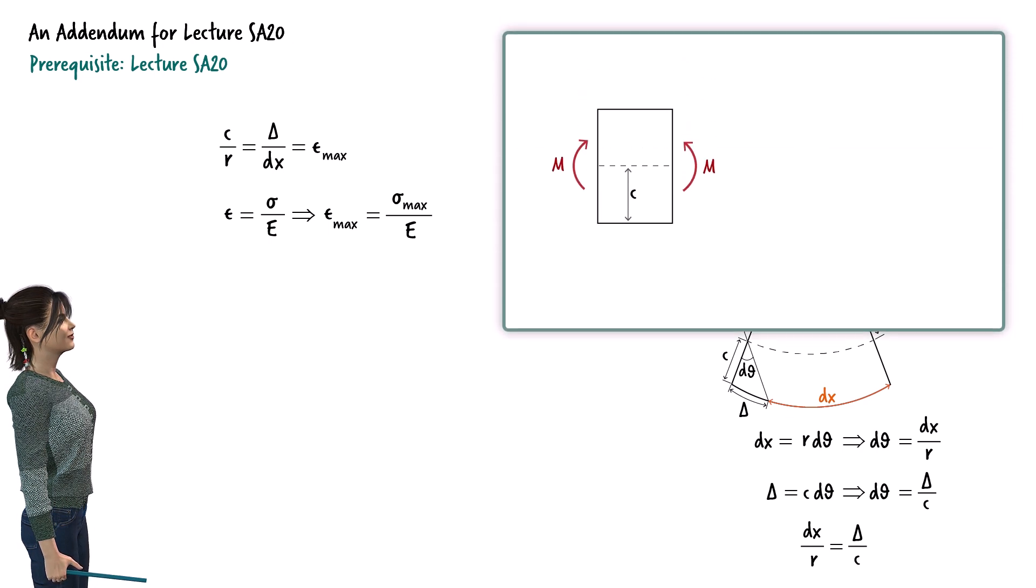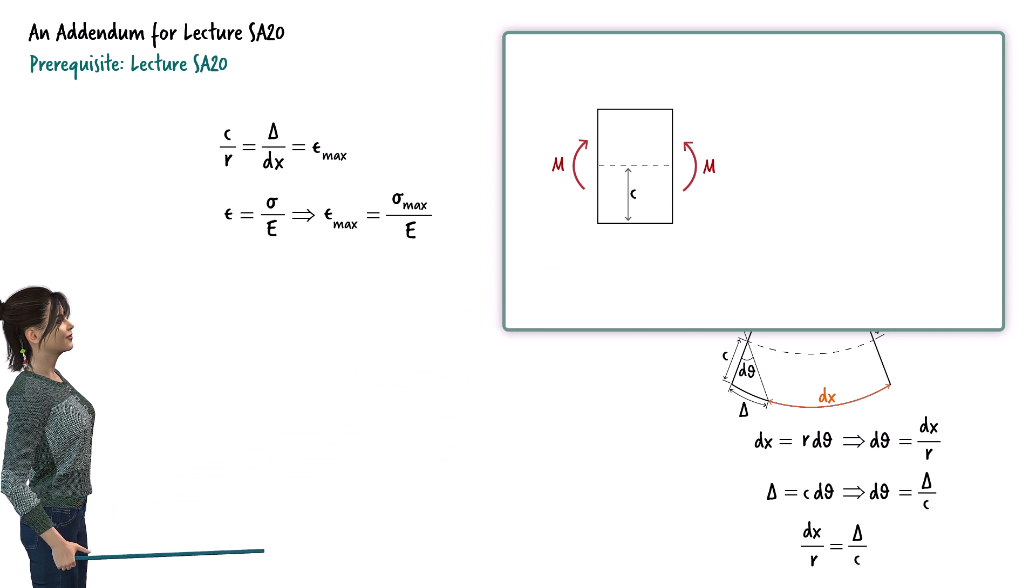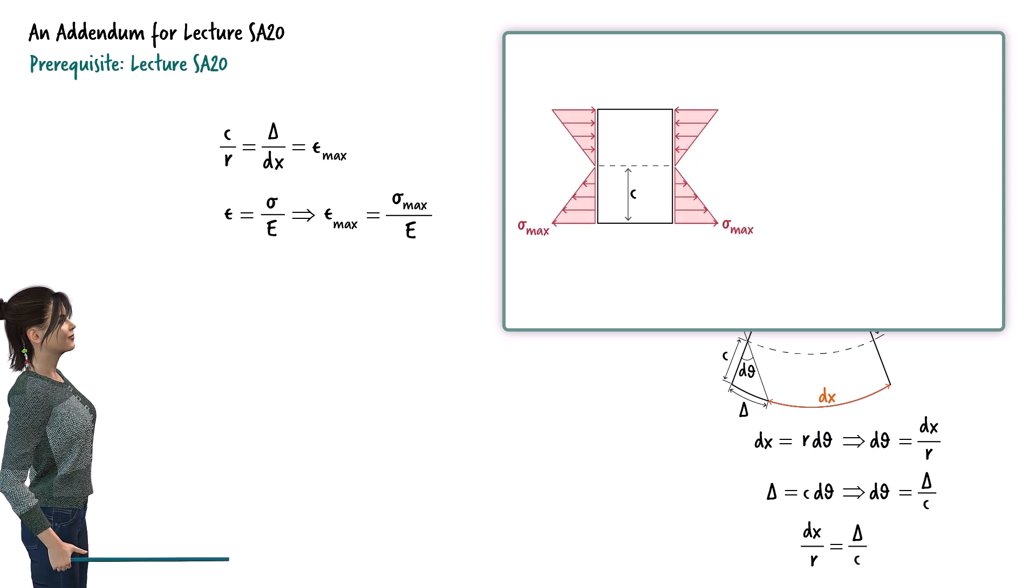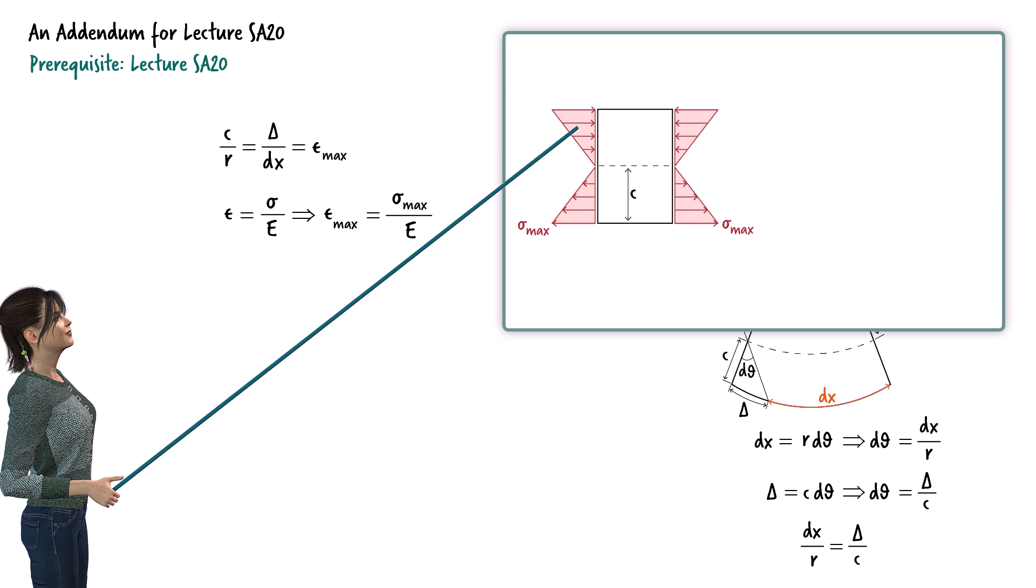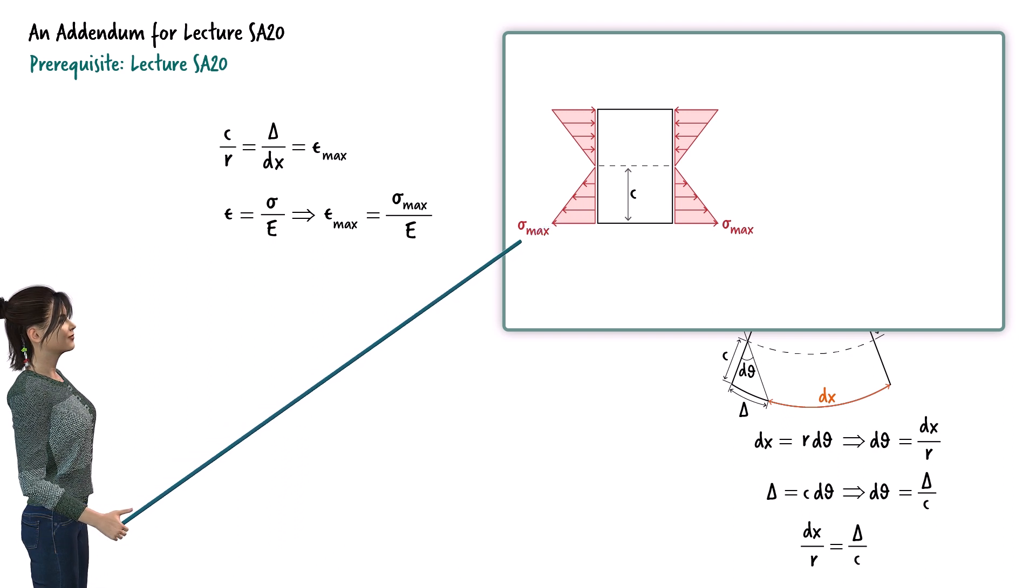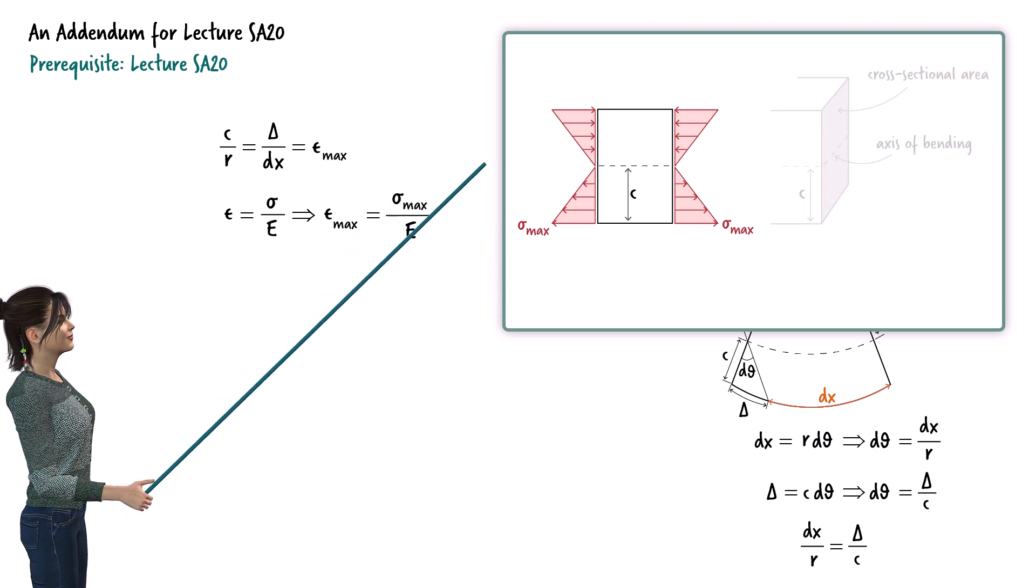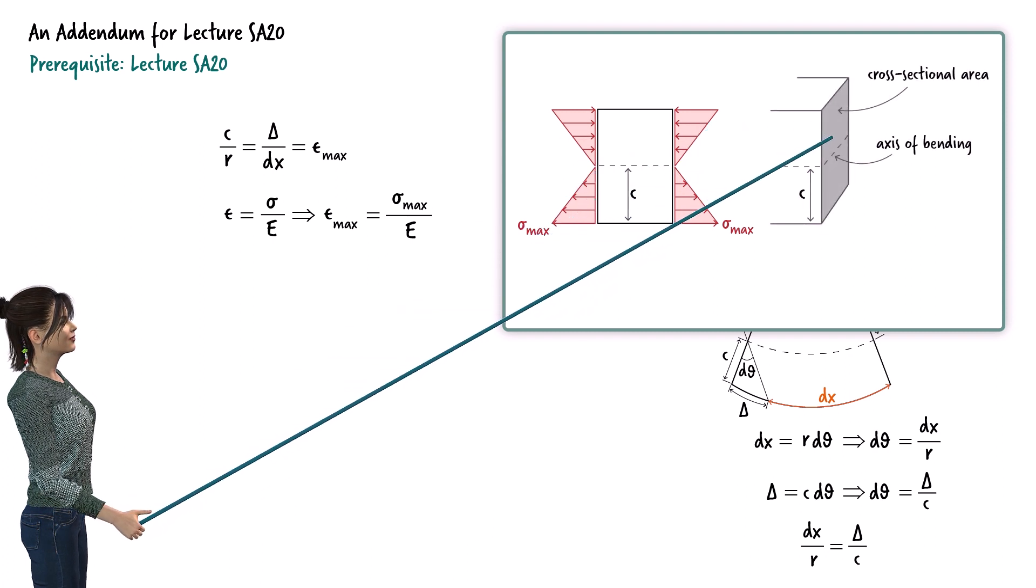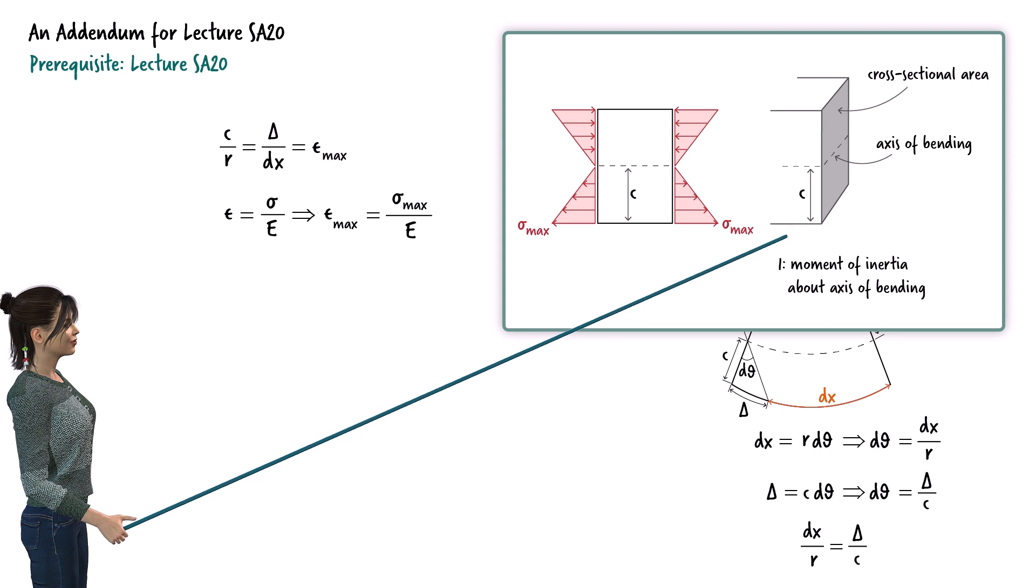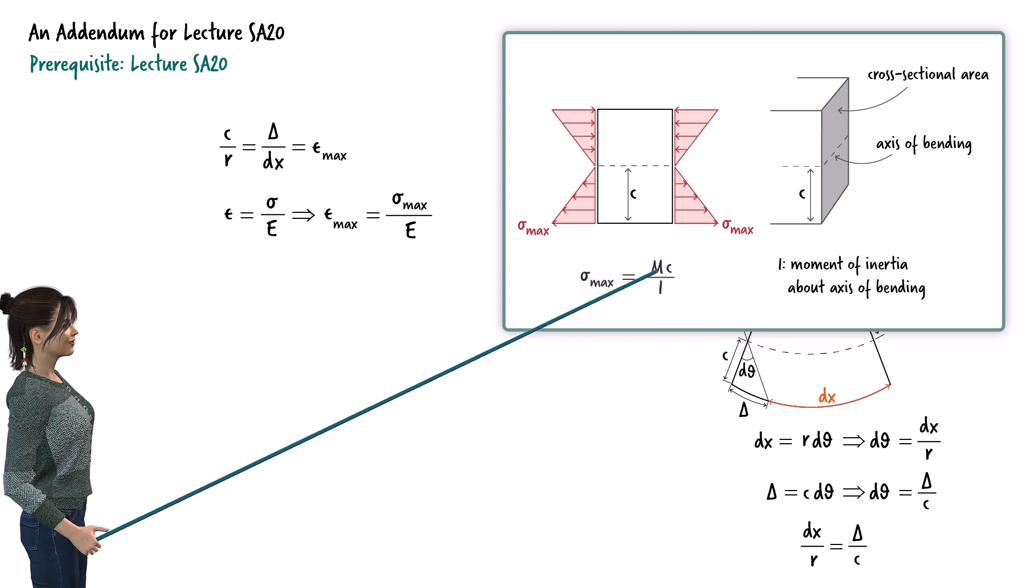Bending stress develops when a beam segment is subjected to a bending moment. Assuming the material behaves linearly, the bending stress distribution at the sides of the segment forms triangles. At the top part of the segment, we have compressive stress. At the bottom, we have tensile stress. Sigma max here, representing the maximum tensile stress in the segment, is the sigma max used in this equation. Suppose this is the cross-section of the beam. If we denote the moment of inertia of the cross-section about the axis of bending as I, then sigma max can be expressed as.